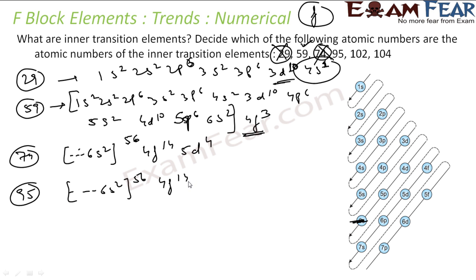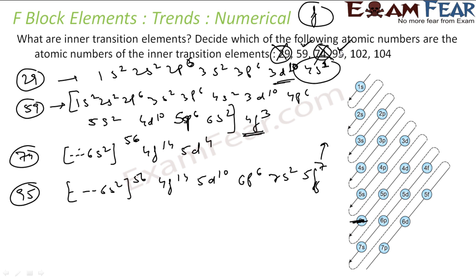For element 95: starting from 56, then 4f14 gives 70, then 5d10 gives 80, then 6p6 gives 86, then 7s2 gives 88, then 5f with 7 electrons: 88 + 7 = 95. The last electron is going into the f block, so element 95 is an inner transition metal — an f-block element.